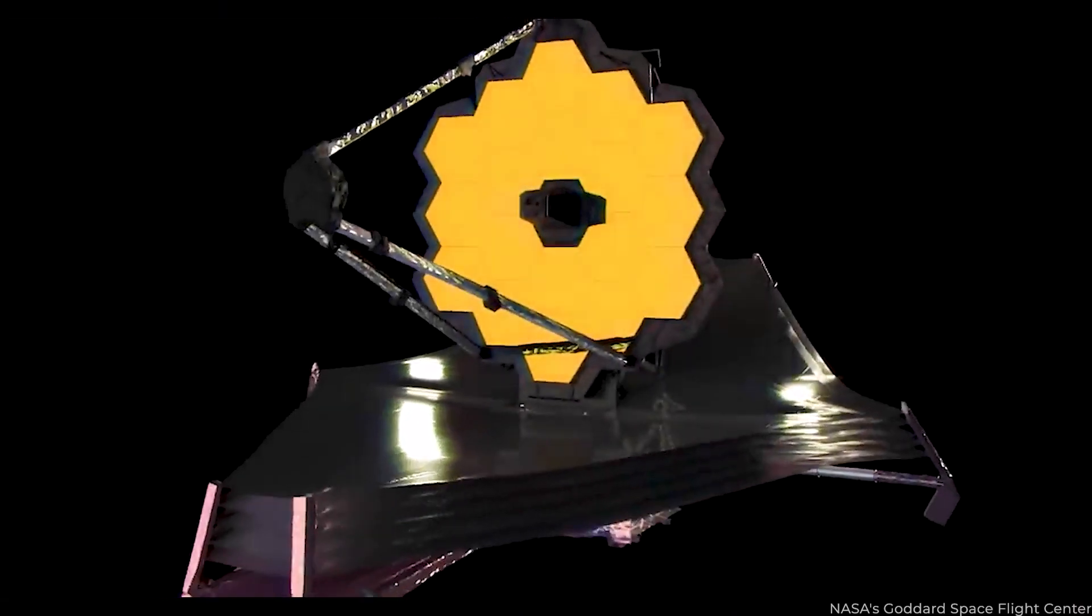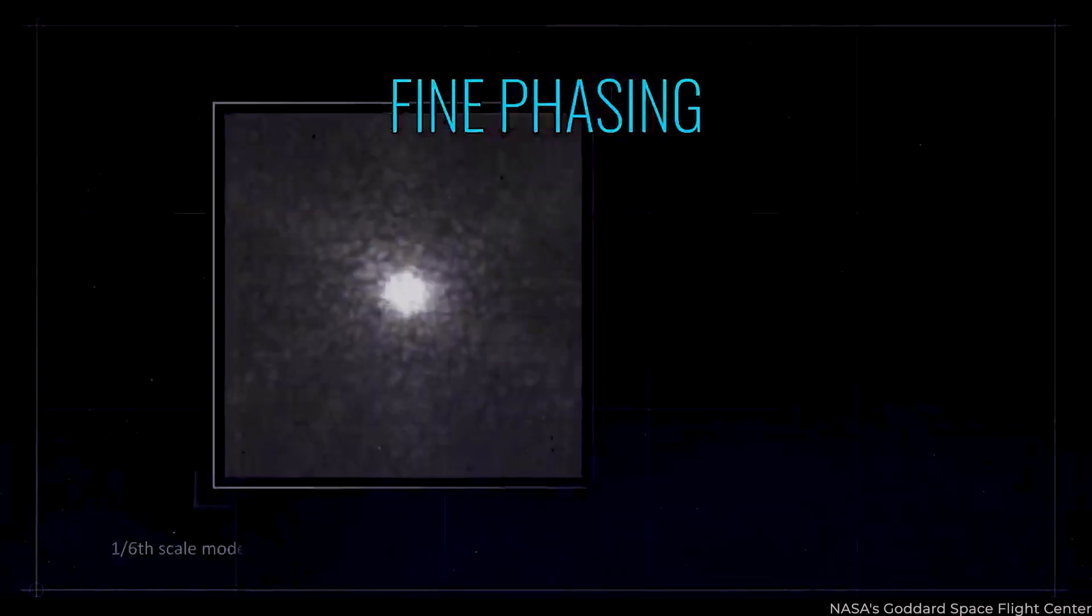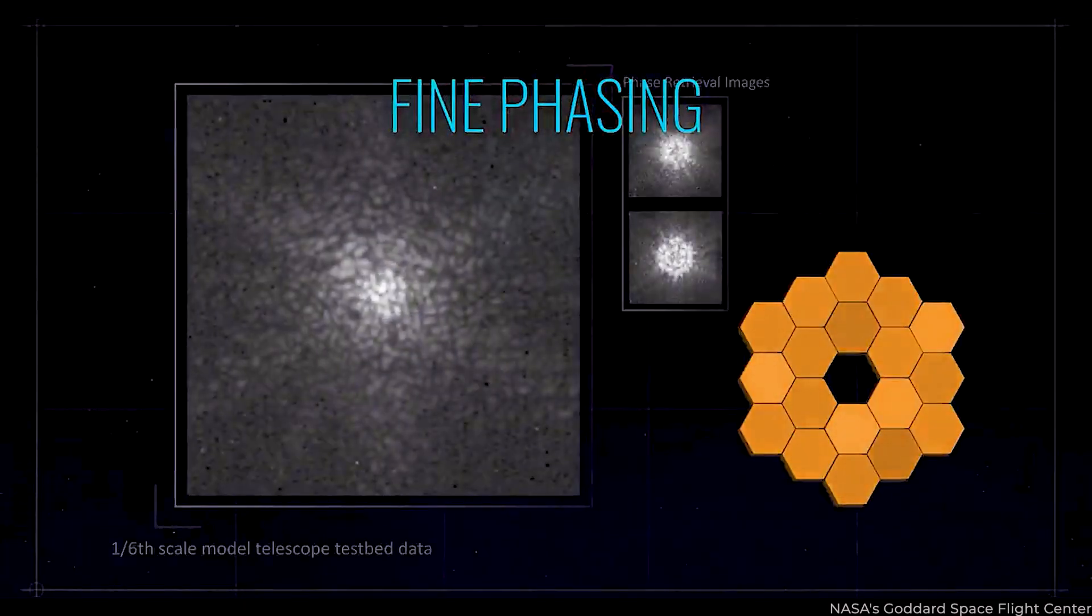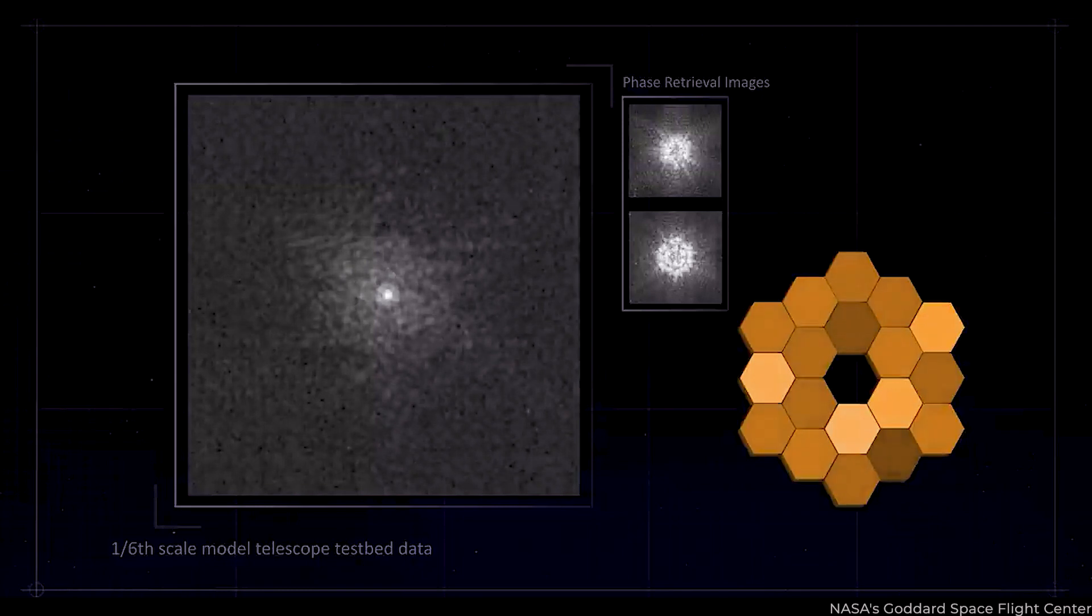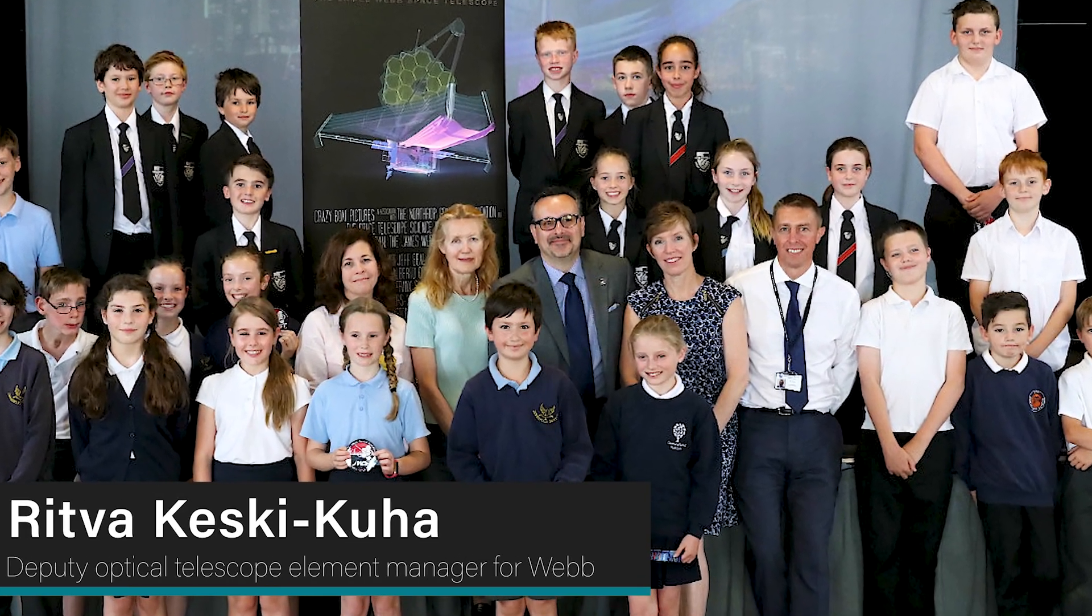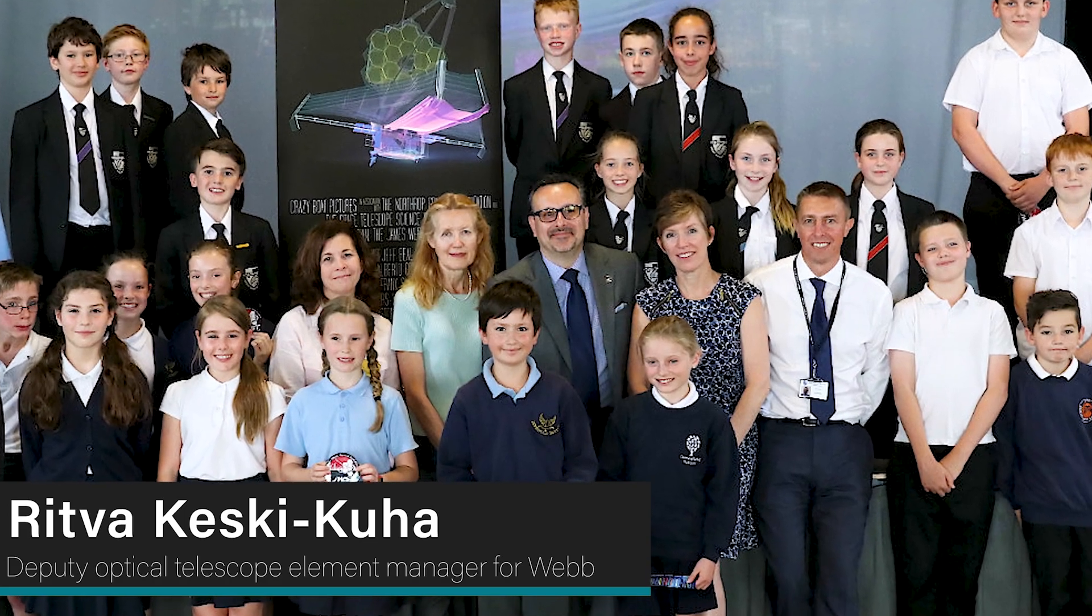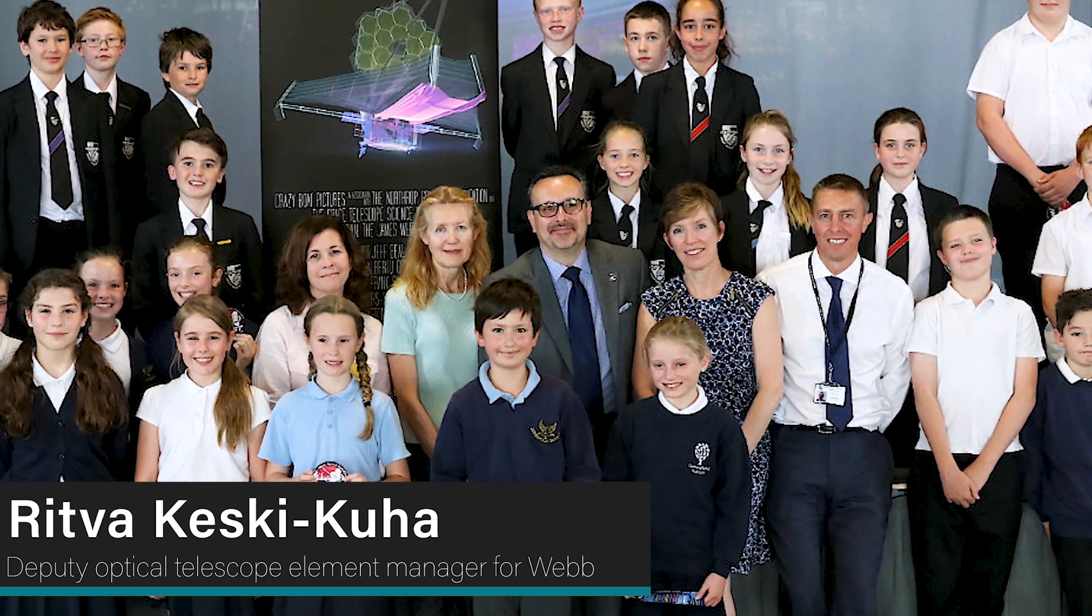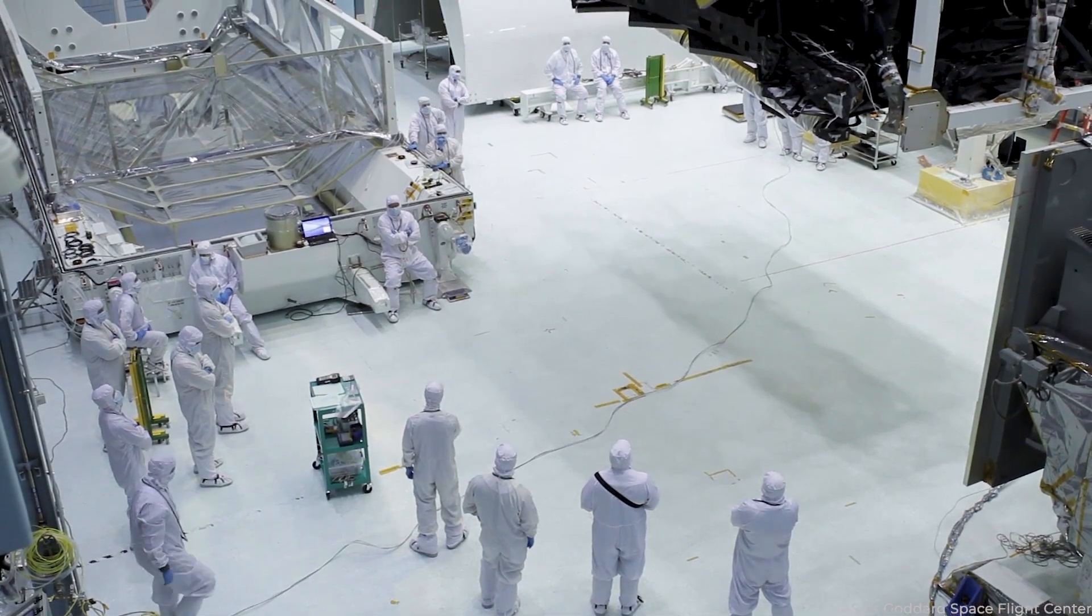To prove the success of the final phasing, each of the Webb's primary mirror segments were realigned to produce a phenomenal unified image centered on a star. At NASA Goddard, Ritva Keski-Kuha, the deputy optical telescope element manager for Webb, is ecstatic that their hunch has been confirmed.